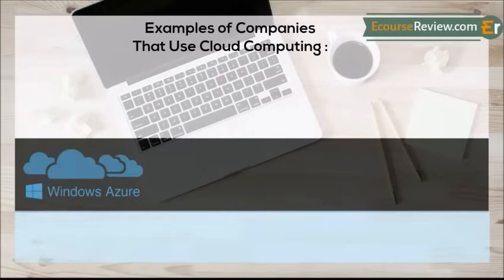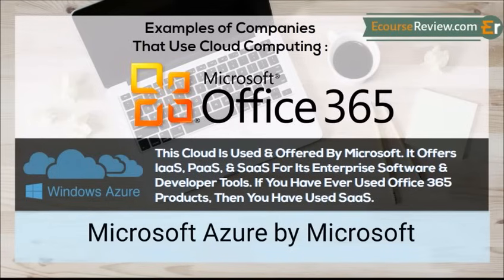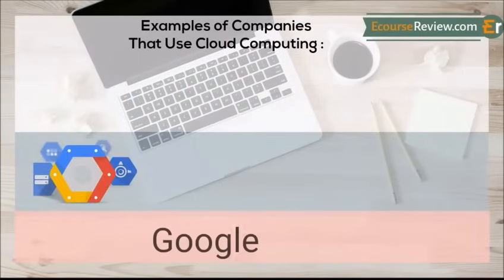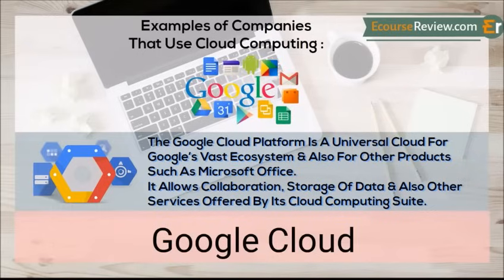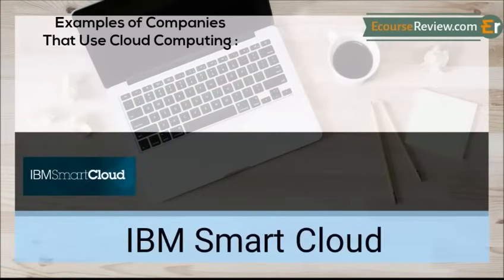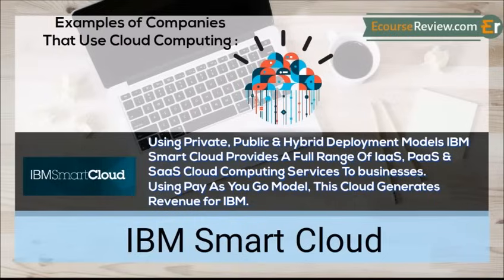Microsoft Azure is used and offered by Microsoft. It offers IaaS, PaaS, and SaaS for its enterprise software and developer tools. If you have ever used Office 365 products, then you have used SaaS. Google Cloud platform is a universal cloud for Google's vast ecosystem and also for other products such as Microsoft Office — it allows collaboration, storage of data, and other services. IBM Smart Cloud, using private, public, and hybrid deployment models, provides a full range of IaaS, PaaS, and SaaS cloud computing services to businesses, generating revenue for IBM through a pay-as-you-go model.